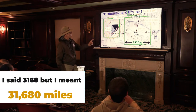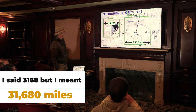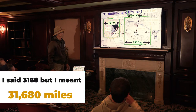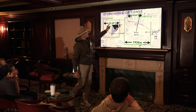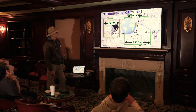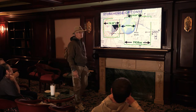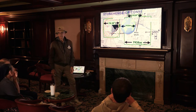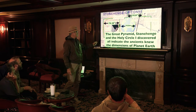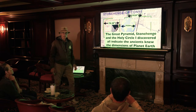That square is 7,920 cubits of Noah. That square is 79.20 feet. The Great Pyramid is 7,920 inches. Through the center of the Earth, it's 7,920 miles. The Great Pyramid, Stonehenge, and the Holy Circle which I discovered all indicate that the ancients knew the dimensions of planet Earth.